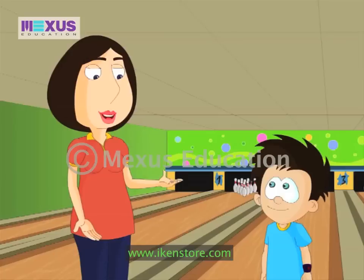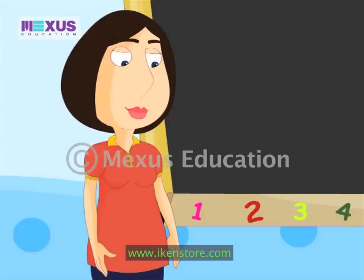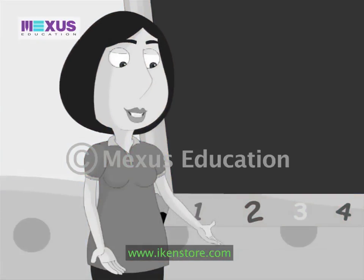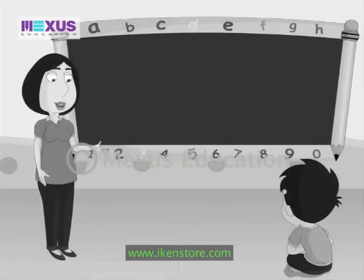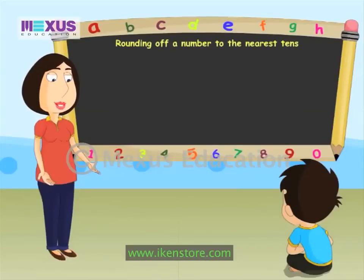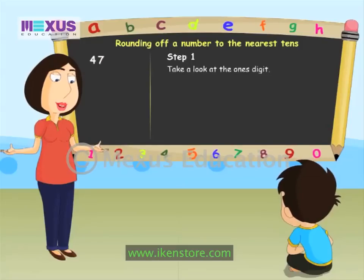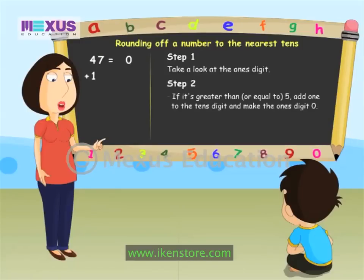Want to learn more about rounding numbers, JC? Yes! Let's go! Let's learn how to round off a number to the nearest tens. Let's think of a number. How about 47, Mom? Okay, let's round off 47 to the nearest tens. First, take a look at the digit at the ones place. That's 7. Is 7 less than 5? So we make the ones place 0 and add 1 to the digit at the left of the ones place. So we round off 47 to 50.